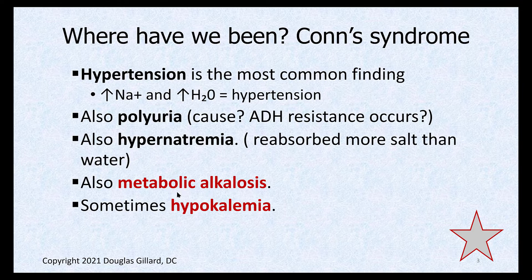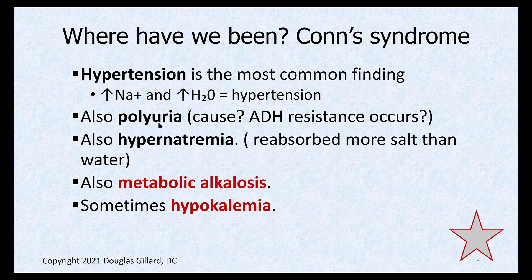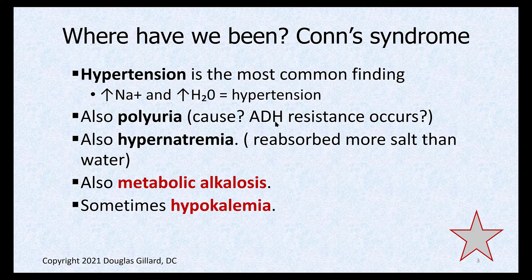Patients also develop metabolic alkalosis and sometimes hypokalemia, because aldosterone's job is to reabsorb salt and water and excrete potassium and hydrogen ion. Another common clinical finding is polyuria — patients urinating all the time. We're not exactly sure why, but leading theories suggest hyperaldosteronism makes the principal cell resistant to ADH, so you don't get reabsorption of free water and that water goes right out into the urine.